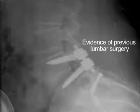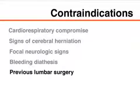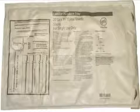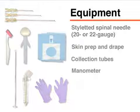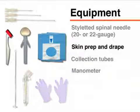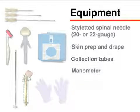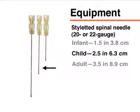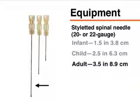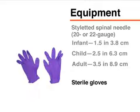Patients who have previously undergone lumbar surgery should be referred to an interventional radiologist. Before performing the lumbar puncture, you will need a commercially available tray containing the necessary supplies: a spinal needle with a stylet, equipment for skin preparation, drapes, collection tubes, and in some cases a manometer. Typically, a 20 to 22 gauge needle is used, with the length ranging from 1.5 inches or 3.8 centimeters for infants, to 2.5 inches or 6.3 centimeters for children, and 3.5 inches or 8.9 centimeters for adults. You will also need sterile gloves.